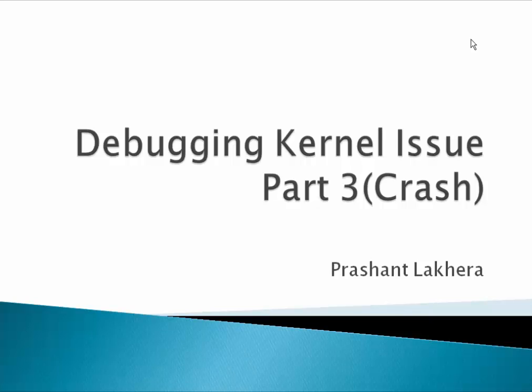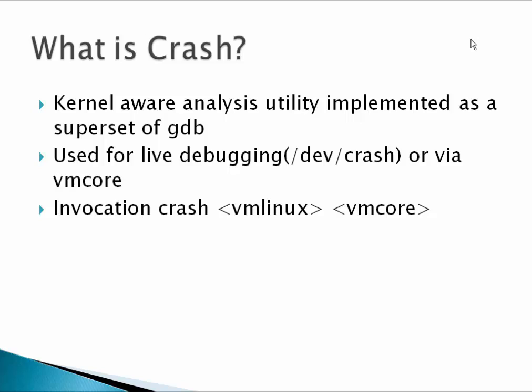Hello everyone, my name is Prashant and this is the last part of this kernel debugging series. In part 2, we saw how we can configure kdump to dump a VM core to a specific location. Now in this part, we will see how we can analyze that VM core generated by kdump, looking at some basic crash commands and the use of vmlinux.